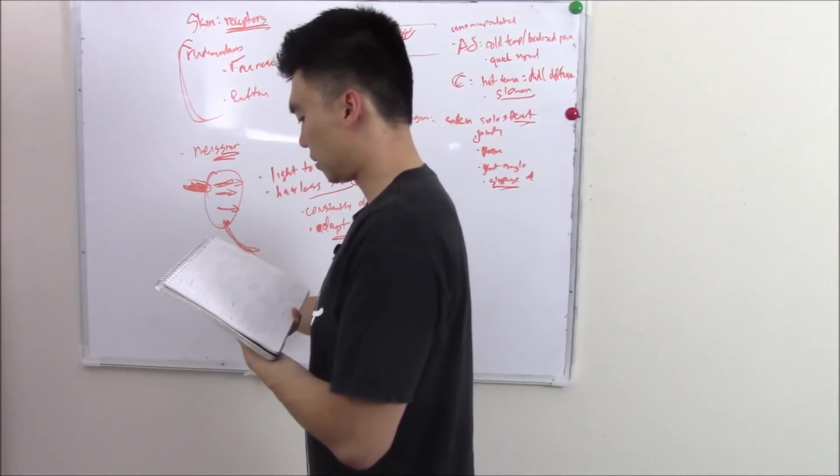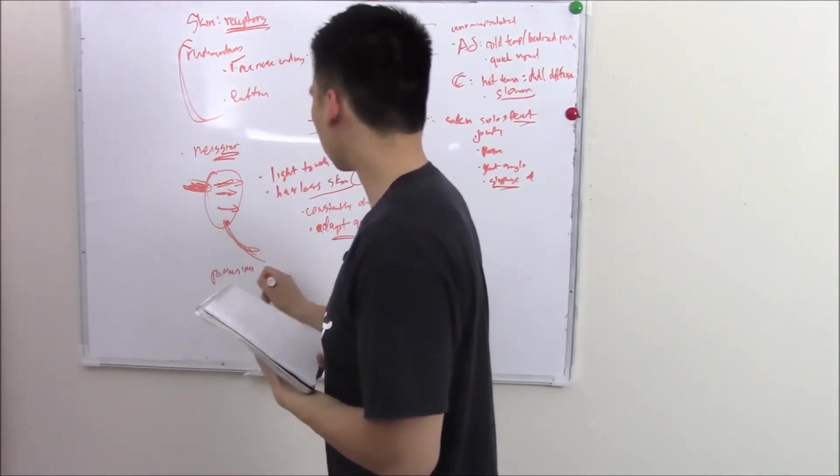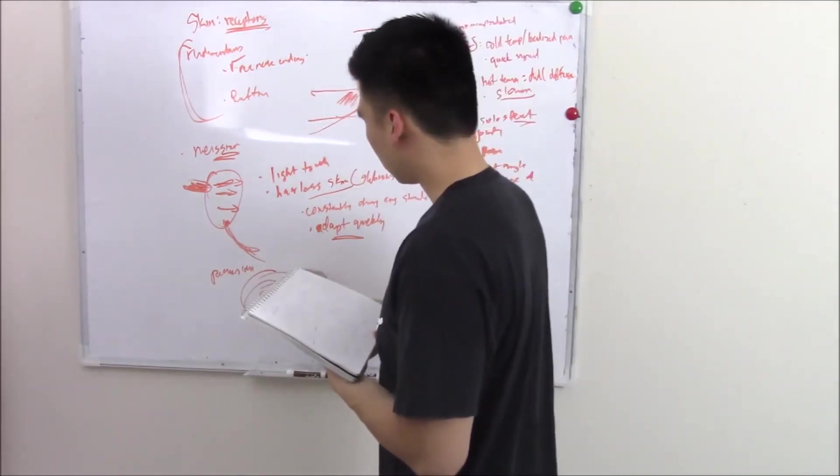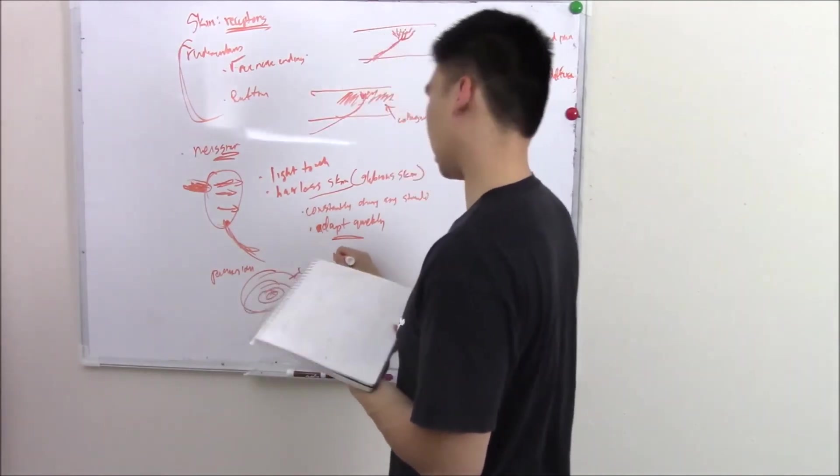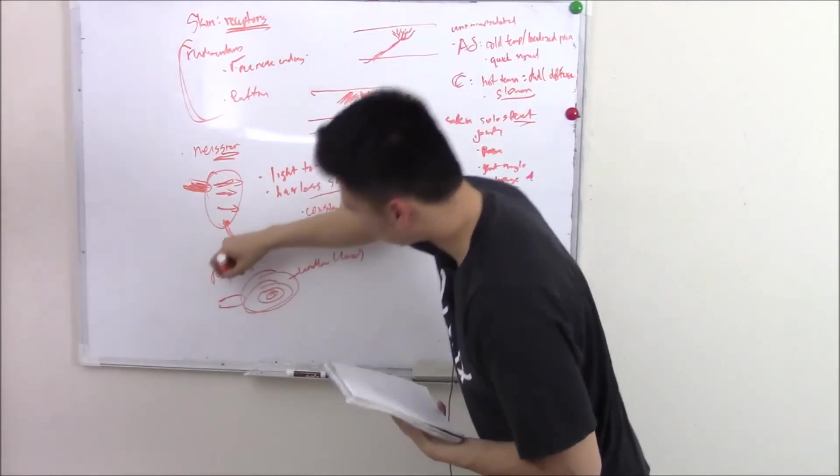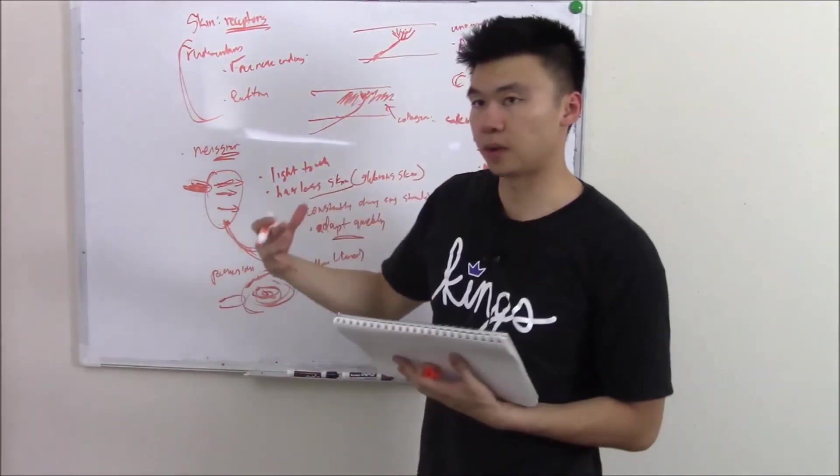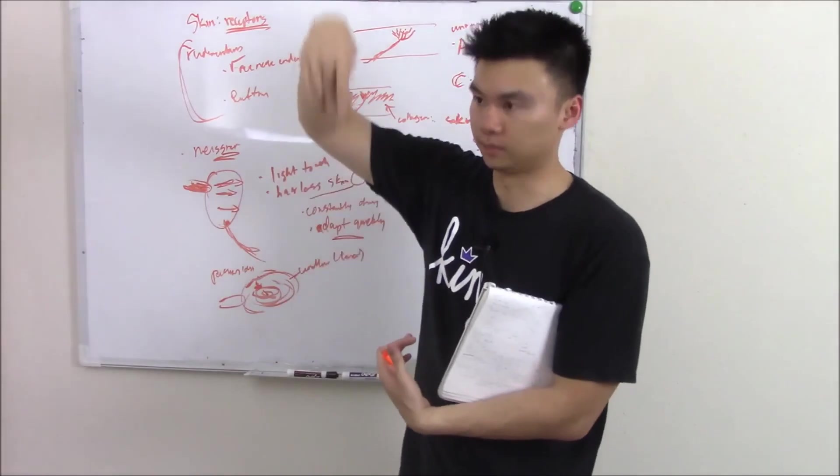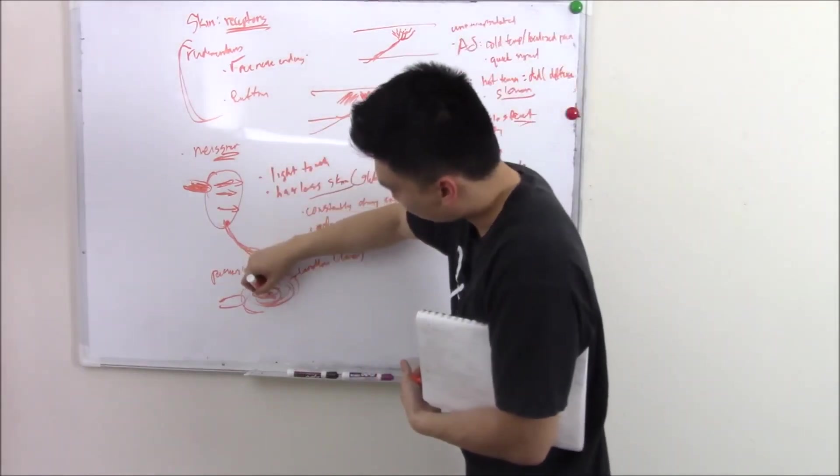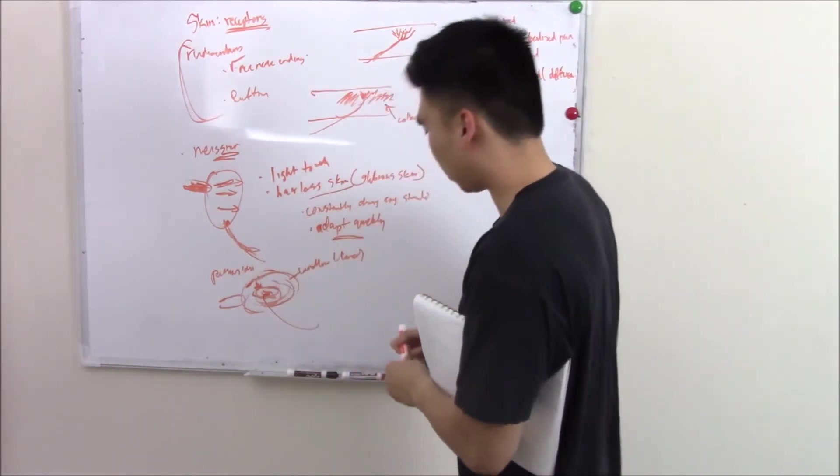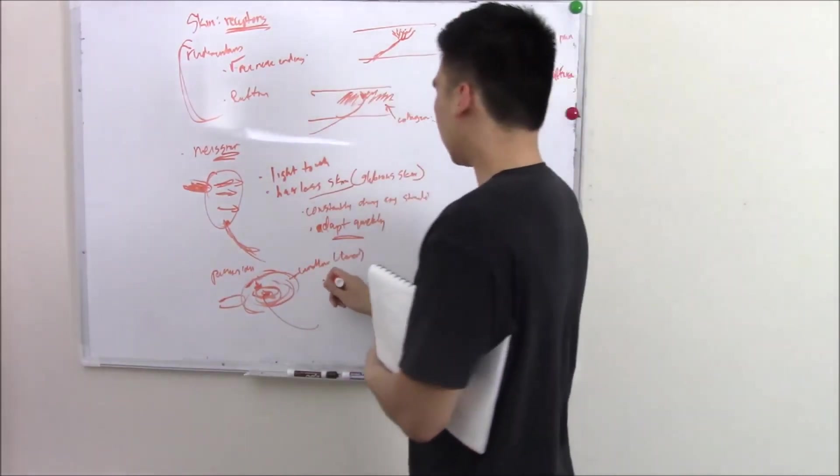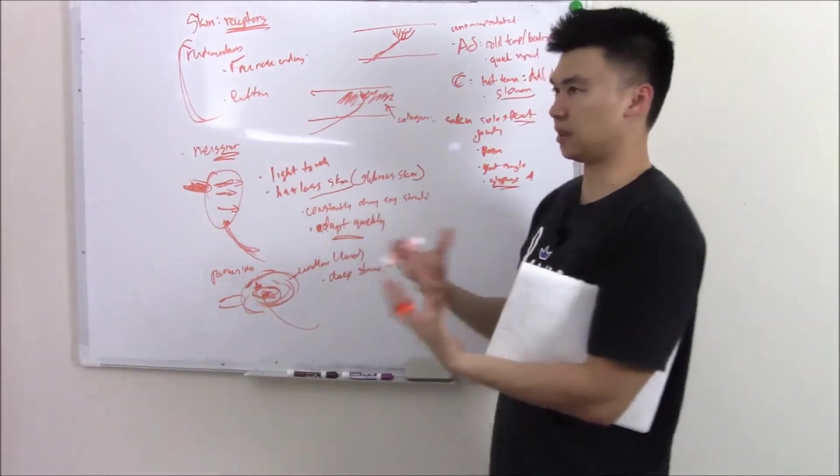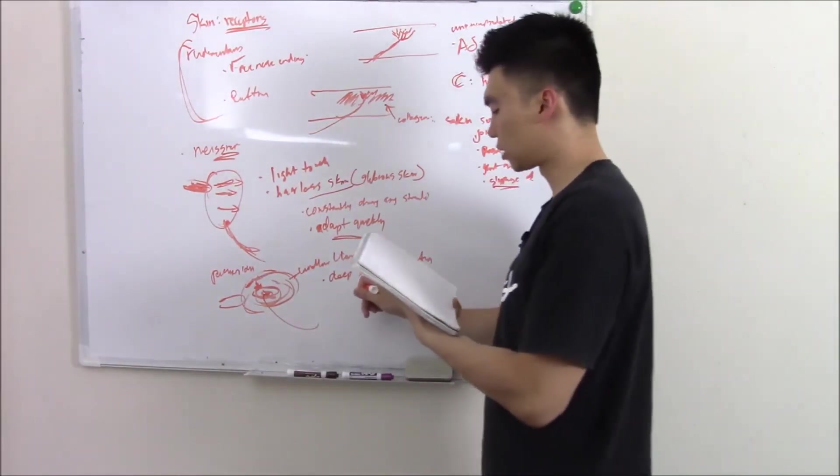Another structure you can have is Pacinian. And these look kind of like concentric circles. Sometimes we call it lamellar. Lamellar means layers. And when there's a force, especially a vibration, it'll shake these layers. And ions will be able to flow through and reach the more inner layer. And you keep going until you reach the center. And guess what's in the center? That's right, a nerve. And that nerve will depolarize and send a signal. So these need a little deeper stimuli, usually in the form of vibration, to get these lamellar layers to shake. So this will be in deeper skin also.